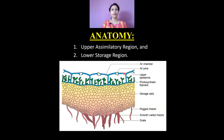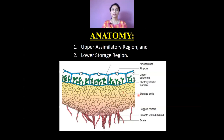The upper epidermis has a pore called an air pore. This upper epidermis forms some chamber-like structures enclosing the photosynthetic filaments, and these chambers are known as air chambers — this is the upper assimilatory region in Marchantia. The lower storage region is made up of storage cells, which are parenchymatous, and they store the products of the photosynthetic region, that is starches, oils, and other substances. On the lower epidermis of this storage region, the scales as well as the rhizoids are present.